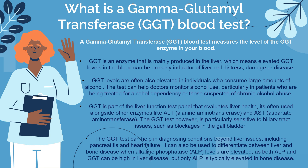So what is a gamma glutamyl transferase, or GGT, blood test? The GGT blood test measures the levels of the GGT enzyme in your blood. GGT is an enzyme that is mainly produced by the liver, which means elevated GGT levels in the blood can be an early indicator of liver cell distress, damage, or disease.